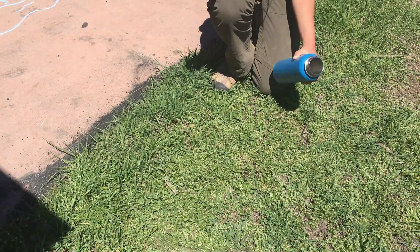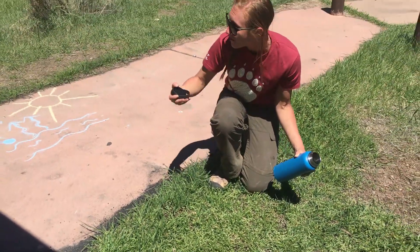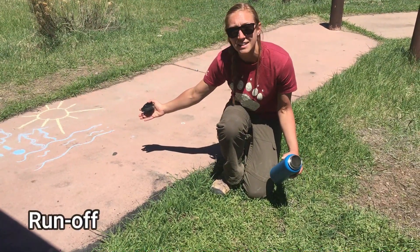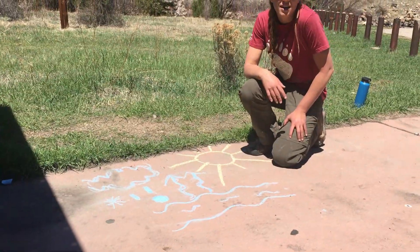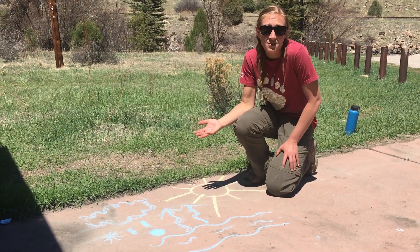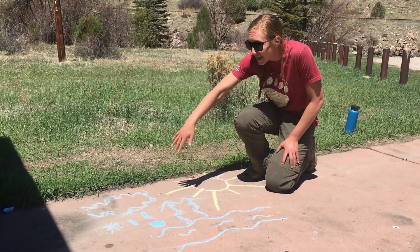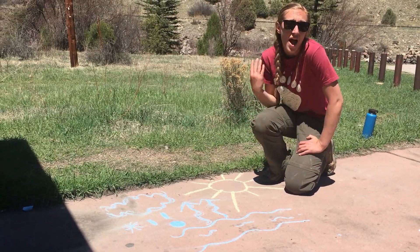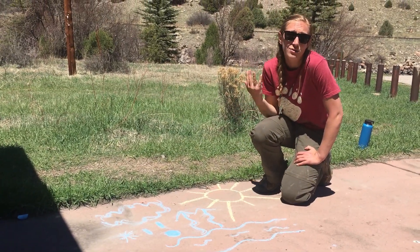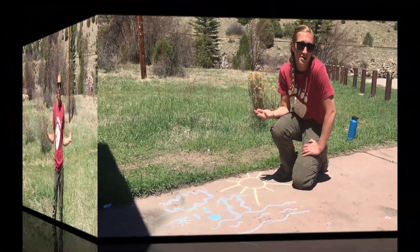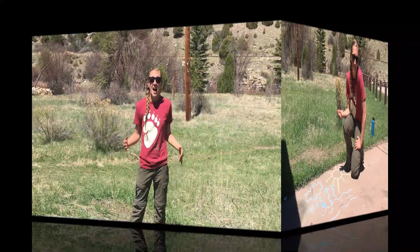As water falls back to the Earth as precipitation, some of it is absorbed by the ground, but if it's not absorbed by the ground, some of it runs off and back into the river. The water cycle doesn't have to follow any special order — it can go out of order, so every water droplet is on its own special journey.